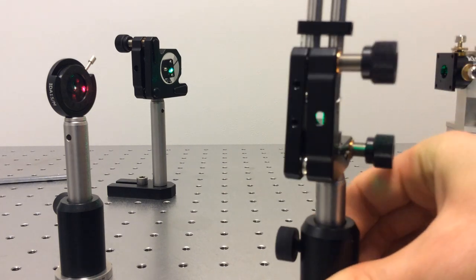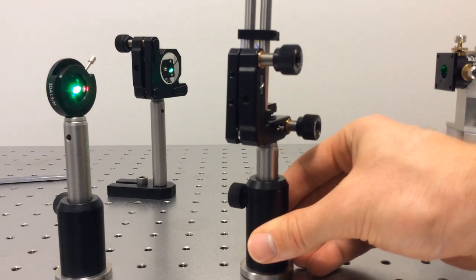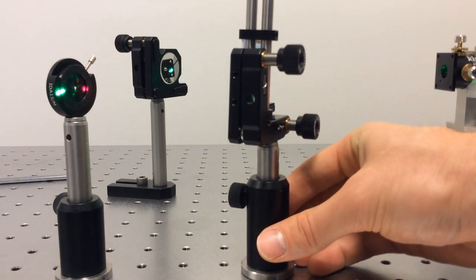That is a specially coated piece of glass that is a window for red light, but a mirror for green light. Now, the alignment sequence is important.